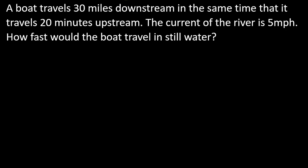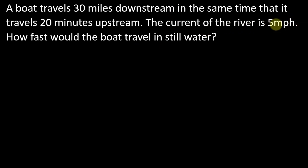These problems are in the guided notes if you have them. So here's a very typical distance, rate, and time problem: a boat travels 30 miles downstream in the same time that it travels 20 miles upstream. The current of the river is 5 miles per hour. How fast would the boat travel in still water? Think about how water works on a river - going with the current is a lot faster than going against it. So still water is the speed we're interested in.